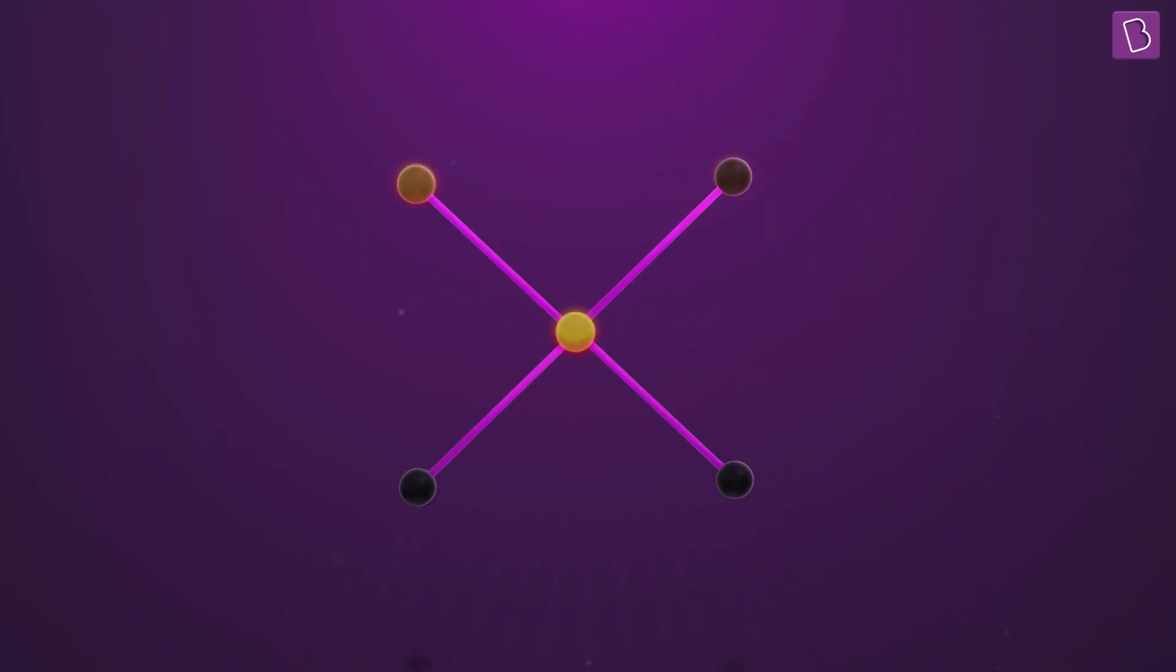In a diamond, each carbon atom is bonded to four other carbon atoms. And these bonds are nothing but shared electrons, so they constantly repel and try to move away from each other.